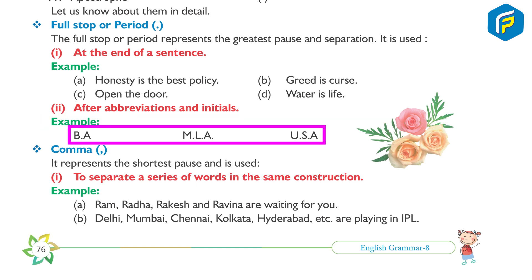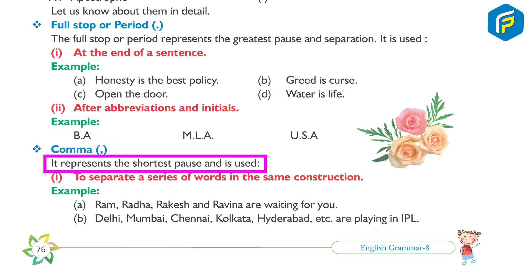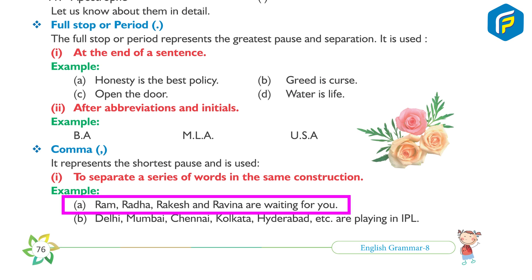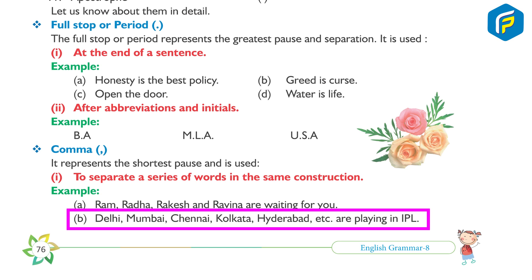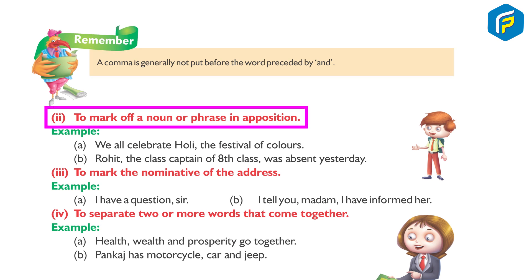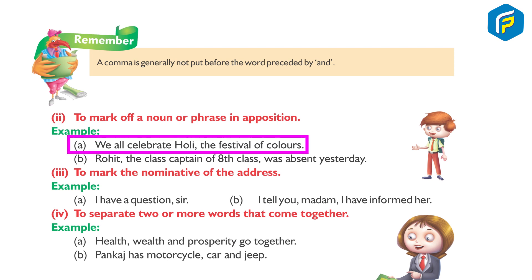Comma: It represents the shortest pause and is used: one, to separate a series of words in the same construction. Example: Ram, Radha, Rakesh, and Raveena are waiting for you. Delhi, Mumbai, Chennai, Kolkata, Hyderabad, etc., are playing in IPL. Remember, a comma is generally not put before the word preceded by 'and'. Two, to mark off a noun or phrase in apposition. Example: We all celebrate Holi, the festival of colors.